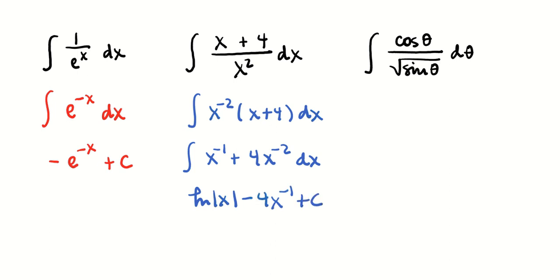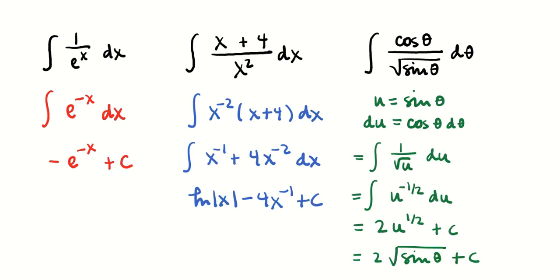And then this third one — this is also a fraction, but we're seeing this is a composition of functions: square root of sine theta. The derivative of the inside of the composition is appearing on the outside with multiplication, so that's going to be our u-to-u pattern. If you need to take a second to pause and think it over, you can do that. But I'm going to move on to stuff we don't know how to do yet.